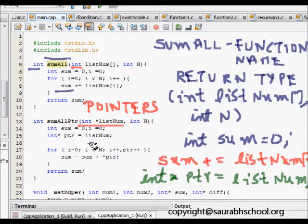So ptr is equal to list num. For i is equal to 0, i is less than n, I do i plus plus, and at the same time I do ptr plus plus, which means it is moving to the next element. Sum is equal to sum plus the dereferencing of pointer here, and then I return the sum.